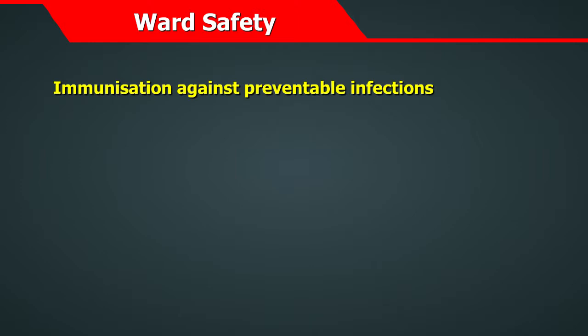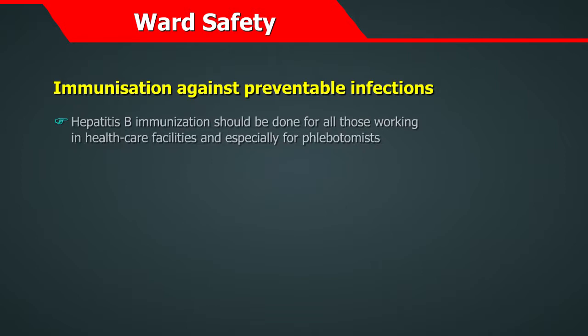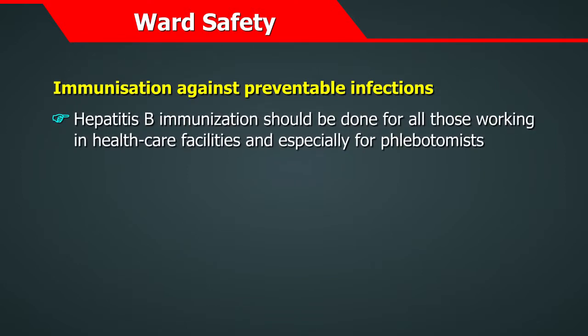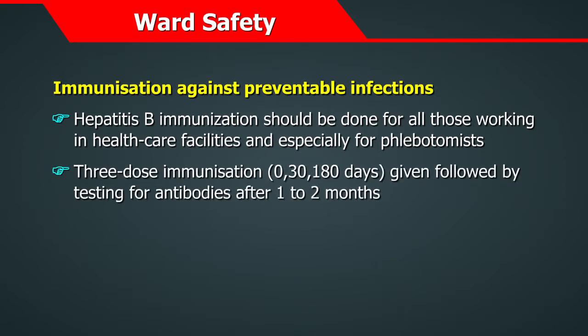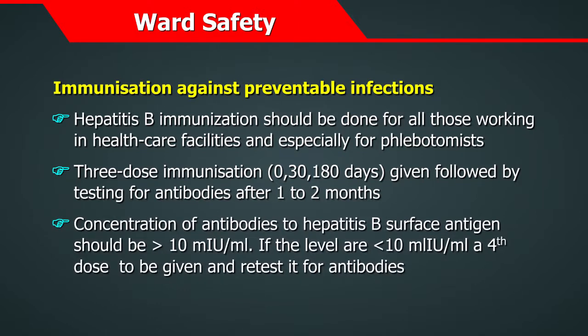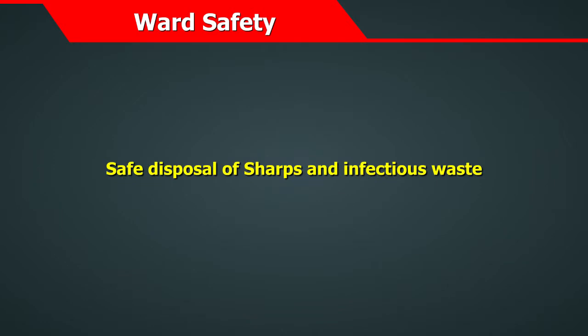Immunisation against preventable infections like hepatitis B should be done for all those working in healthcare facilities, and especially for phlebotomists. A three-dose immunisation schedule should be given, followed by testing for antibodies after 1–2 months. The concentration of antibodies to hepatitis B surface antigen should be more than 10 international units per ml. If levels are less than 10 international units per ml, a fourth dose is to be given and confirmed by testing for antibodies once again.